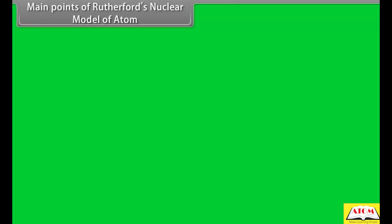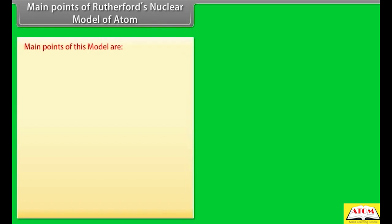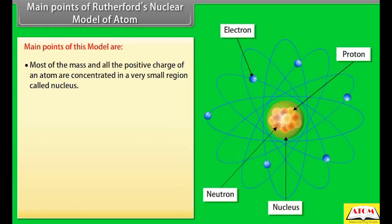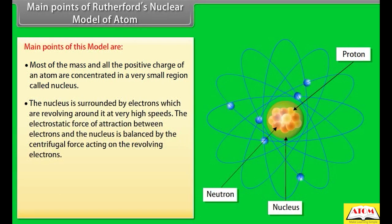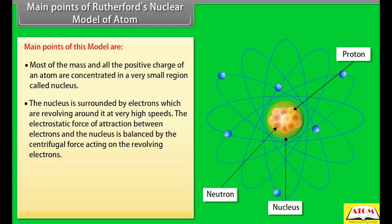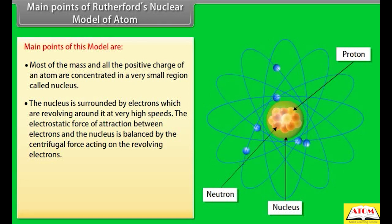Main points of Rutherford's nuclear model: 1. Most of the mass and all the positive charge of an atom are concentrated in a very small region called the nucleus. 2. The nucleus is surrounded by electrons revolving around it at very high speeds. The electrostatic force of attraction between electrons and the nucleus is balanced by the centrifugal force acting on the revolving electrons.